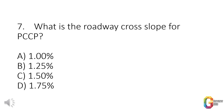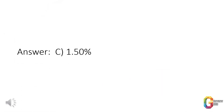Question 7. What is the roadway cross-slope for PCCP? a. 1%. b. 1.25%. c. 1.5%. d. 1.75%. Answer: c. 1.5%.